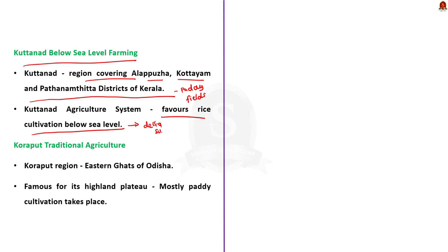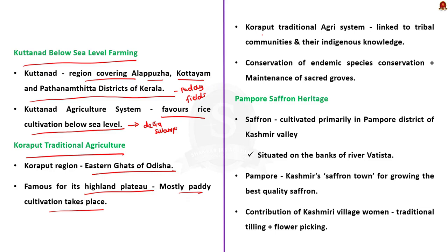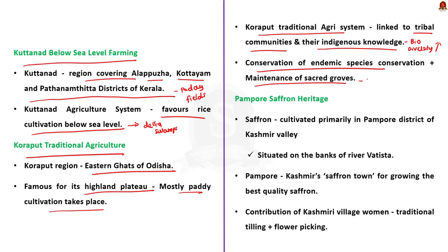Koraput Traditional Agriculture of Odisha: the Koraput region is located in the Eastern Ghats of Odisha and is famous for its highland plateau, where paddy cultivation occupies most agricultural practices. Koraput traditional systems are strongly linked to tribal communities and their indigenous knowledge system. A high biodiversity has been conserved through in-situ conservation, preserving endemic species. The tribes also maintain a tradition of sacred groves to preserve plant species.